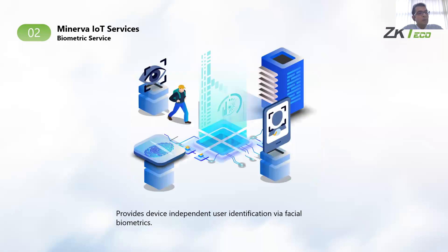Then we have the biometric service. The biometric service allows user identification based on facial identification and spatial biometrics. The user must be registered for their own facial identification. Once registered, this service can be used to authenticate the particular user over a REST API. This service is device-independent — it doesn't require any device to be available, and all capabilities are provided over a RESTful interface.